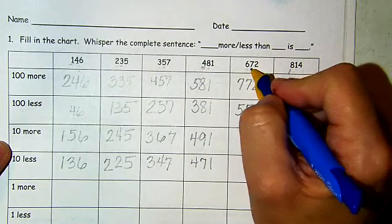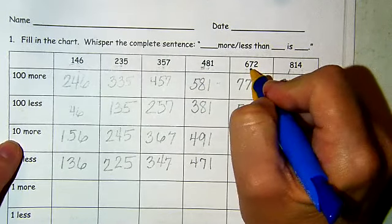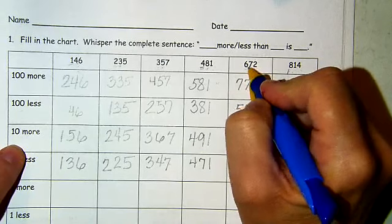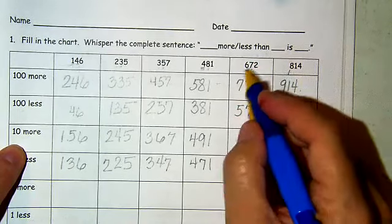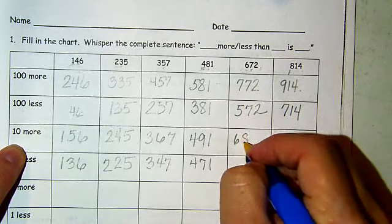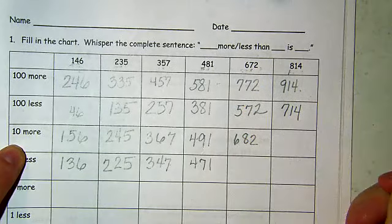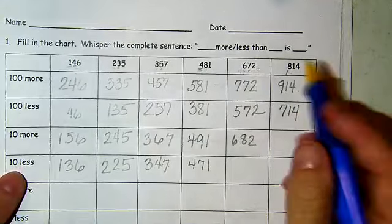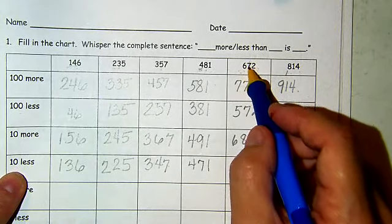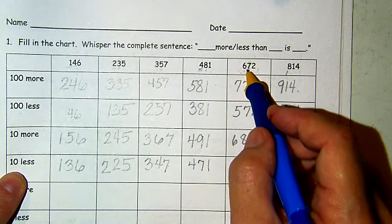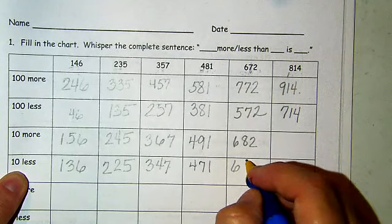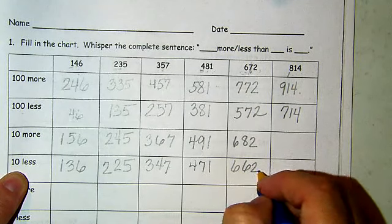672 — we have a seven in our tens place and we're going to put 10 more. Seven tens plus one 10 is eight, so the others stay the same — we're going to have 682. Now 10 less than 672 — we're going to take a 10 away from seven, that digit's going to be a six — now we're going to have 662.